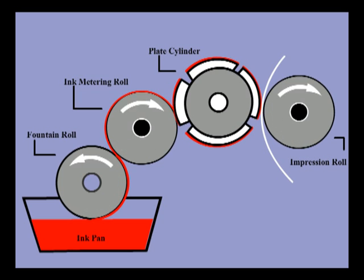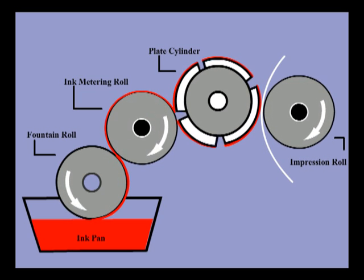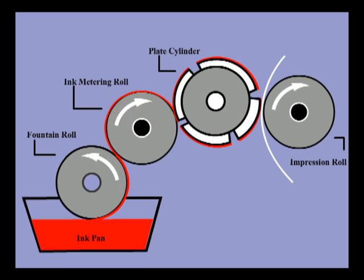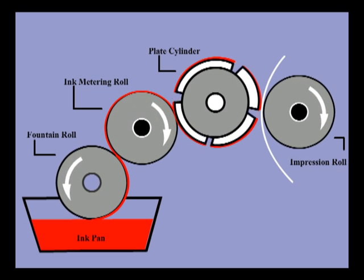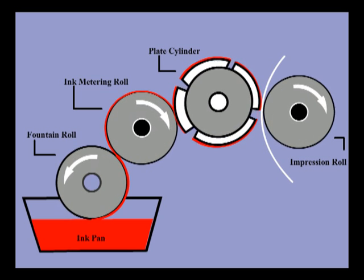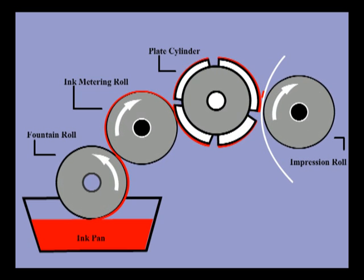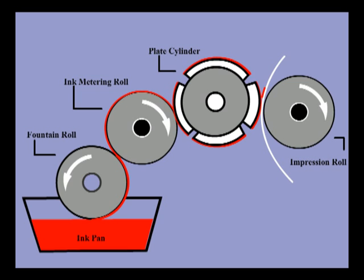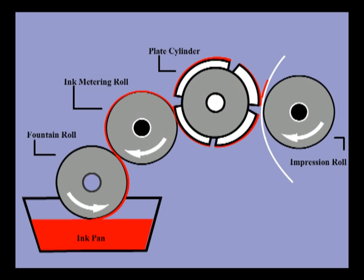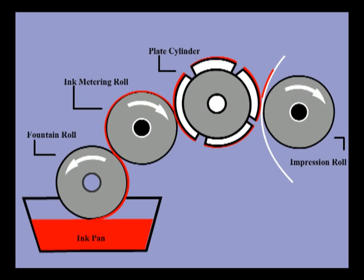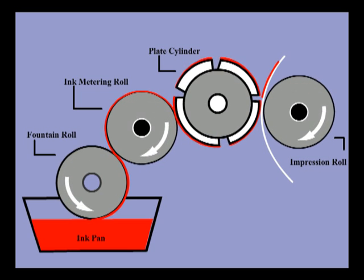The plate cylinder is placed between the anilox roller and the impression cylinder. The anilox roll transfers ink to the plate cylinder. The substrate passes between the plate cylinder and the impression cylinder. The impression cylinder backs up the substrate as it contacts the printing plate. The nip between these two cylinders must be just right to give the proper printing pressure.